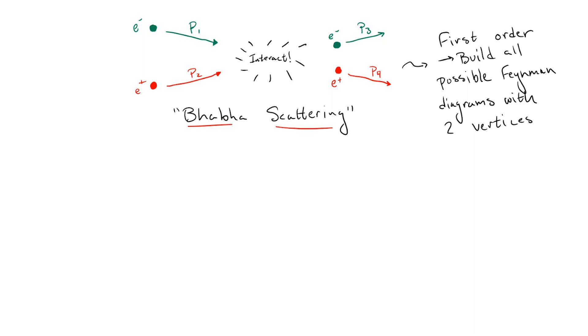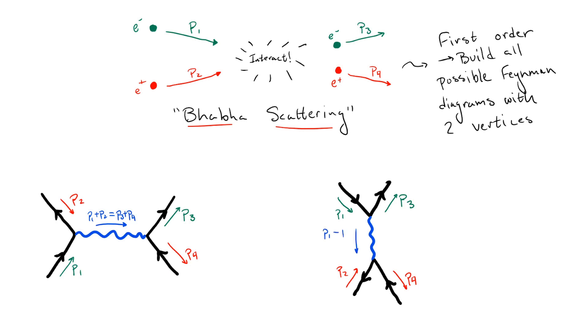At leading order, it's fairly straightforward to show that we only have two possibilities. Making sure that we conserve energy and momentum at each vertex, we can now just take these two diagrams and use our Feynman rules to convert them into mathematical expressions.